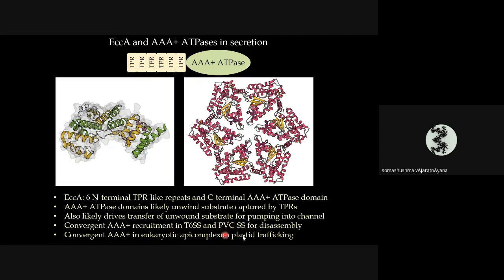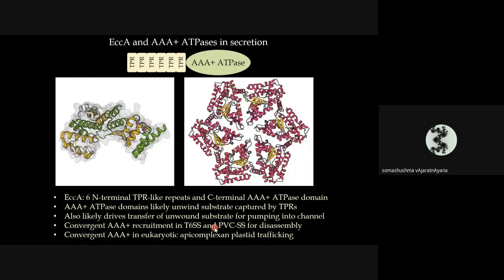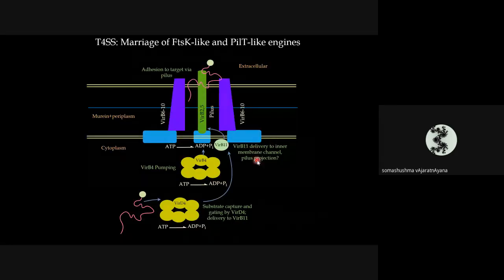EccCA has two distinct regions: a C-terminal A+ ATPase domain and an N-terminal region comprising six TPR repeats forming a horseshoe or C-shaped half-toroidal structure, likely capturing and binding unfolded peptides. The A+ ATPase forms a hexamer with the peptide extruded through the central pore. Similar A+ ATPases have been recruited for the Type 6 system, the PVC (Photorhabdus Virulence Cassette) system, and convergently in some eukaryotic trafficking systems. In Type 6 and PVC, this ATPase's primary role appears to be unfolding and disassembly — these systems are spring-loaded, secreting by default, and the A+ ATPase disassembles them so they can reassemble.